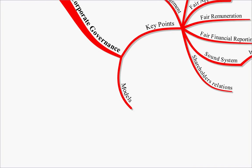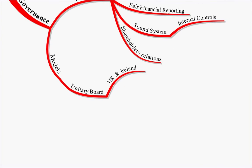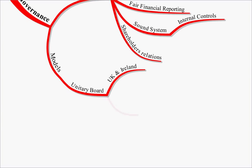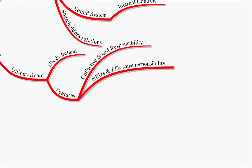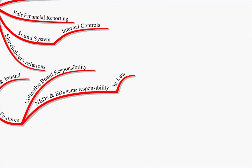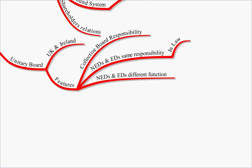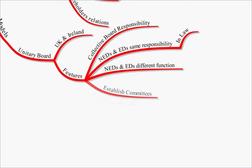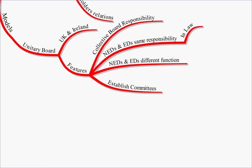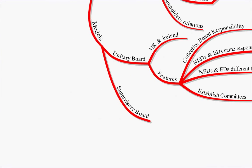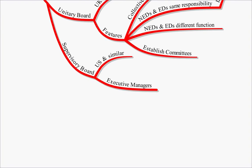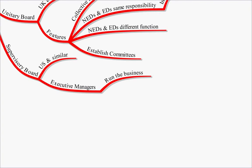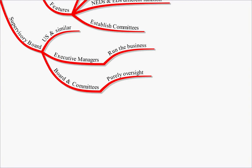There are a couple of models. First, the Unitary Board — this relates really to the UK and Ireland because they have very similar corporate law. It means collective board responsibility, i.e. the board all have responsibility rather than just the CEO. Non-executive directors and executive directors have the same responsibility set down in law, though they have a different function. There must also be established committees, such as the remuneration committee and audit committee. This is opposed to a supervisory board — found in the US and similar jurisdictions — which has executive managers who run the business, and then boards and committees who oversee that executive function.